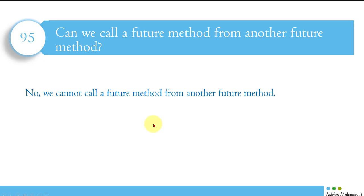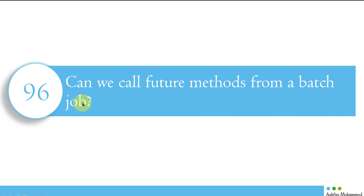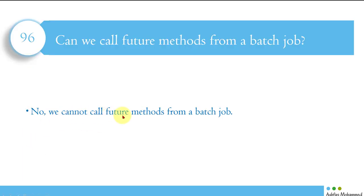If you want, go ahead and create two future methods and try to call one from the other. The next question is: can we call a future method from a batch job? Even though we haven't learned about batch jobs yet, the answer is no — we cannot call a future method from a batch job either. Remember: you cannot call a future method from another future method, and you cannot call a future method from a batch job.